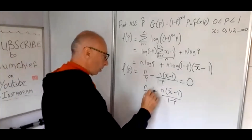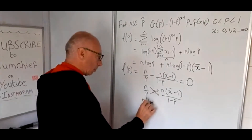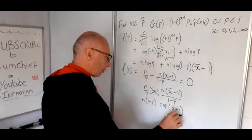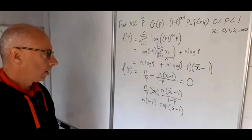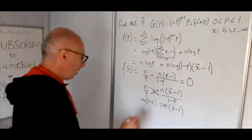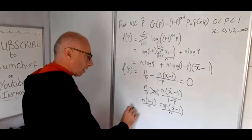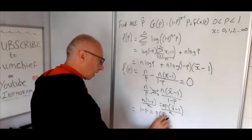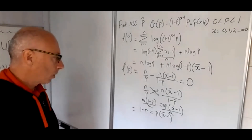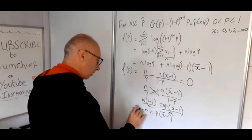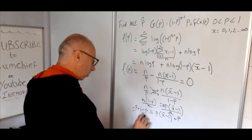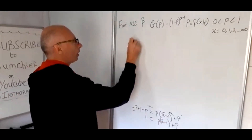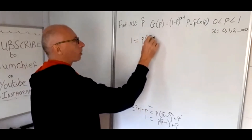Setting this derivative to zero gives n over P equals n times x̄ minus 1 over 1 minus P. Dividing both sides by n cancels the n's, giving 1 minus P equals P times x̄ minus 1. Adding P to both sides: 1 equals P times x̄ minus 1 plus P.